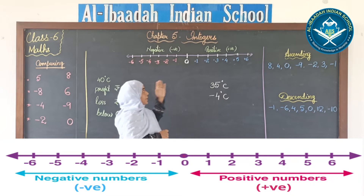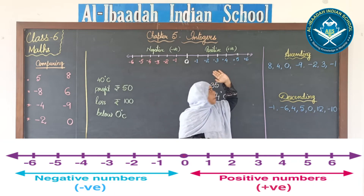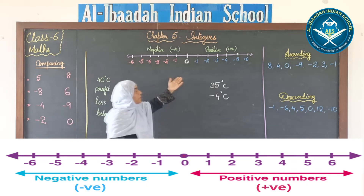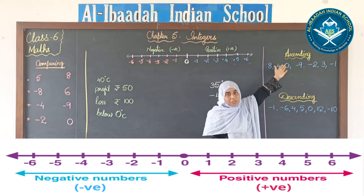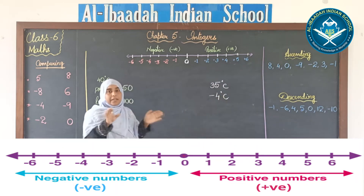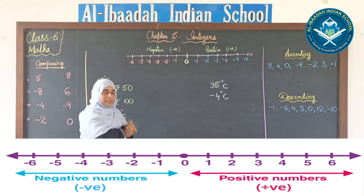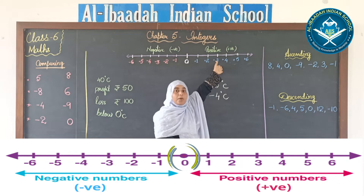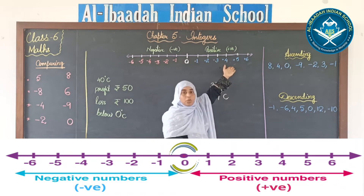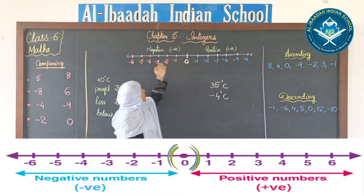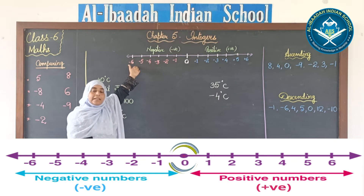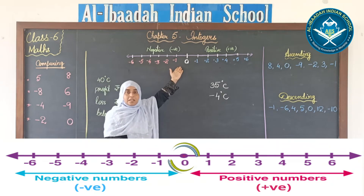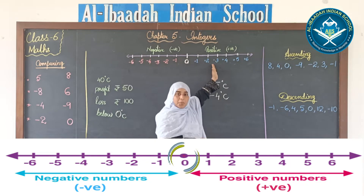If you see a number line drawn in both directions, it goes endless — there are endless positive numbers as well as endless negative numbers. You can keep writing negative integers on one side and positive integers on the other. Zero is in the middle. To the right side of zero we write positive integers, and to the left side of zero we write negative integers.